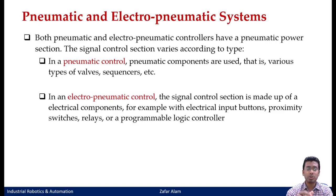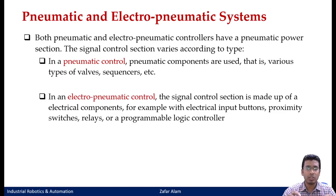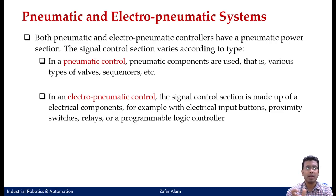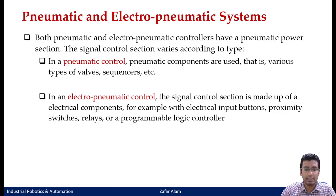In a pneumatic control, the signal control elements used different types of valves. In an electro-pneumatic control, instead of pneumatic components, the signal control section will consist of electrical components. For example, your push-button valve will get replaced by a normally open switch or a normally closed switch, and they will all be carrying electrical signals. In pneumatic control, the signal input was a three-by-two manually operated valve giving pneumatic pressure output.